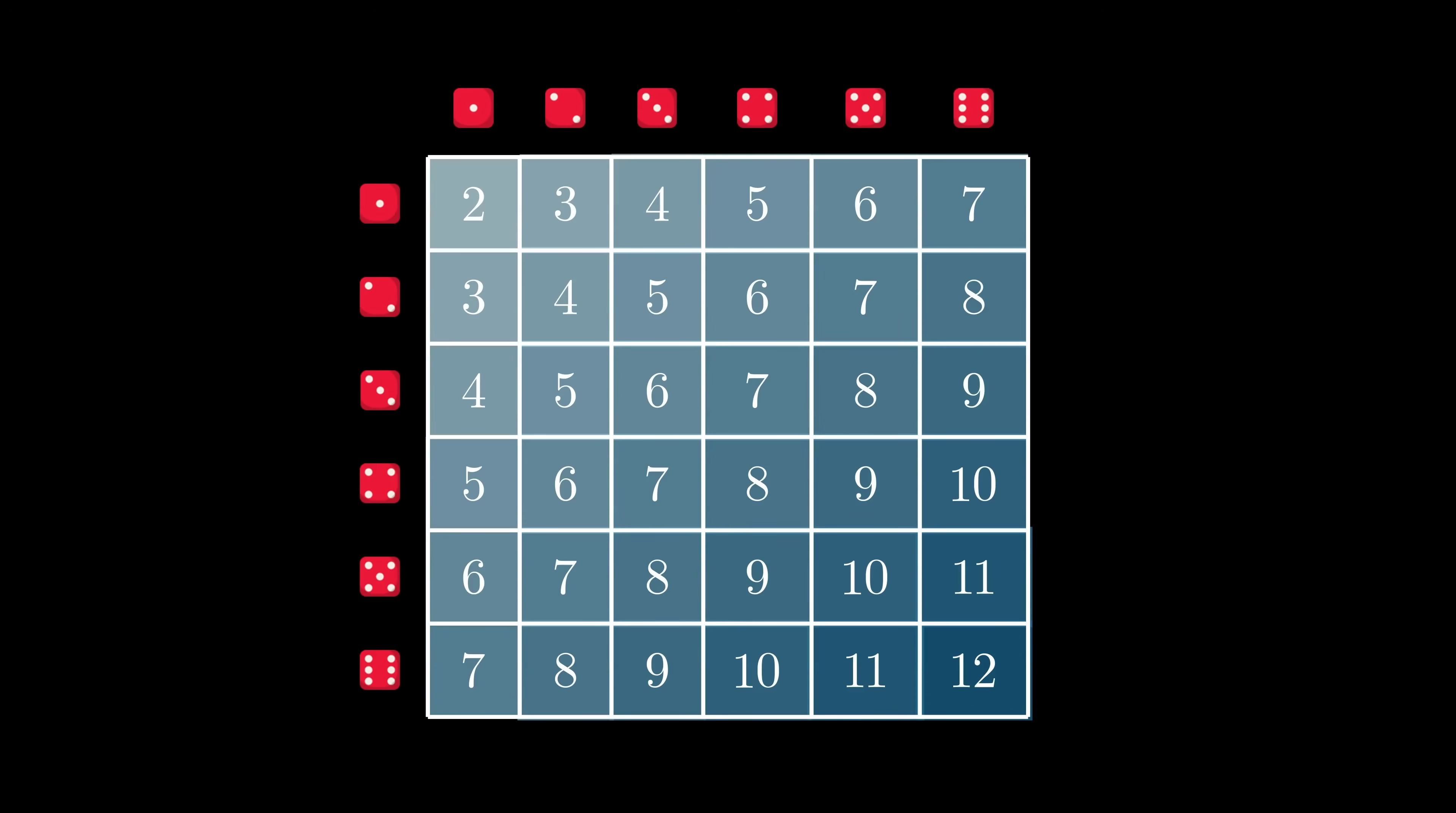For example, notice how the sum 6 occurs in 5 out of the 36 total outcomes, so 6 has a 5 in 36 chance of being the sum. On the other hand, 2 can only occur if both dice show a 1, and so it has a 1 in 36 chance of occurring.